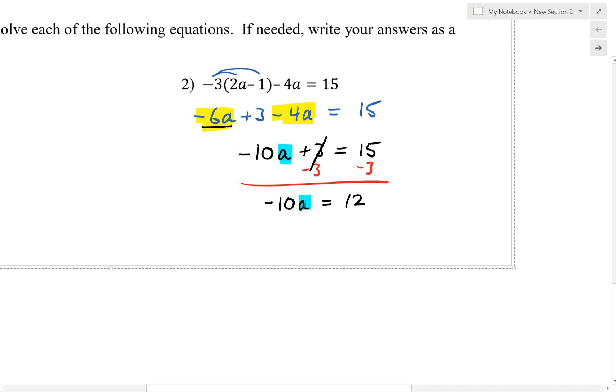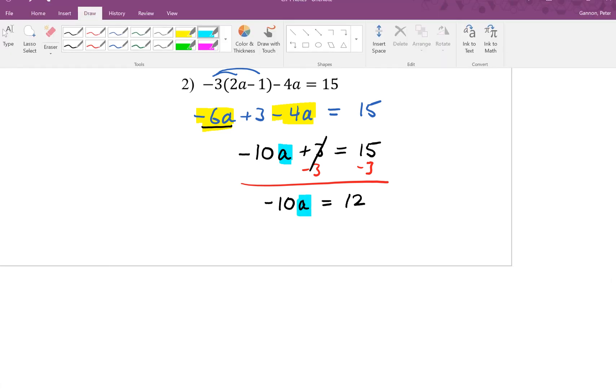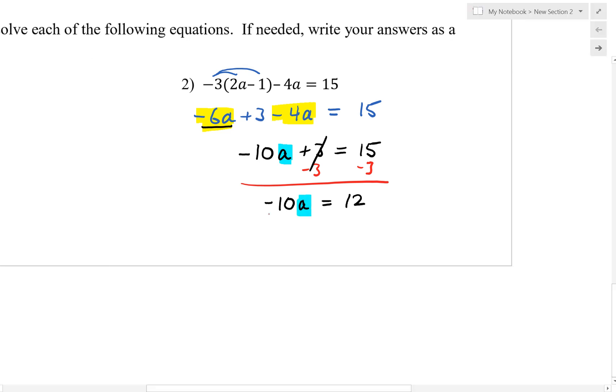We still need to isolate a, so we're going to end up dividing both sides by negative 10. Those cancel. At that point, we have isolated the a.